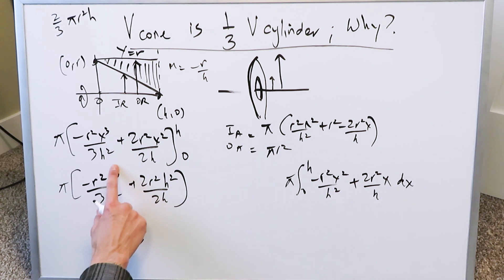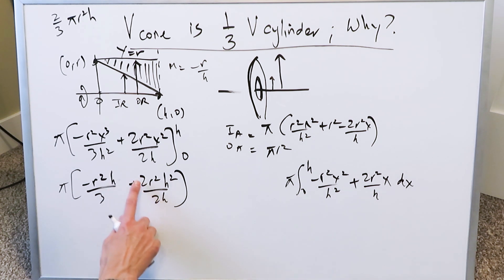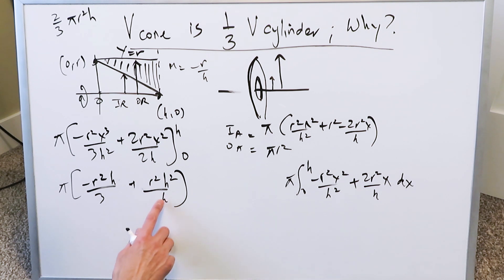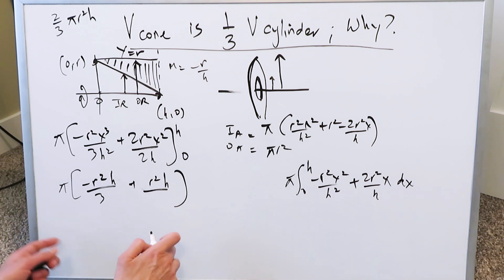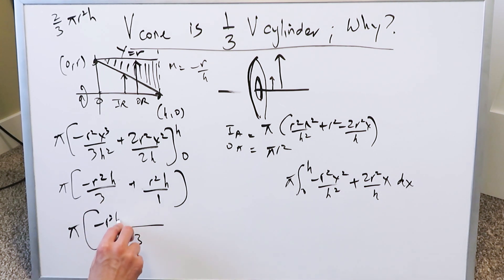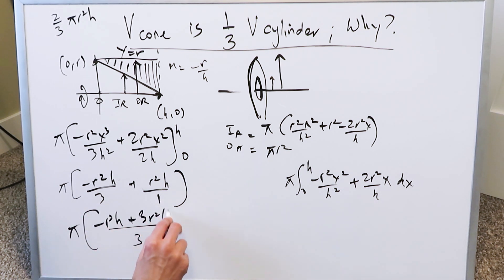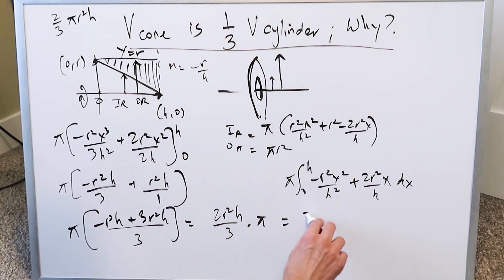Now simplify. We have h² in the denominator and h³ on top, so cancel h² leaving h. The 2s cancel each other. We also cancel the remaining h terms. Taking a common denominator of 3 and combining: π times (−r²h + 3r²h)/3, which gives π times 2r²h/3. Written properly, this is (2/3)πr²h.